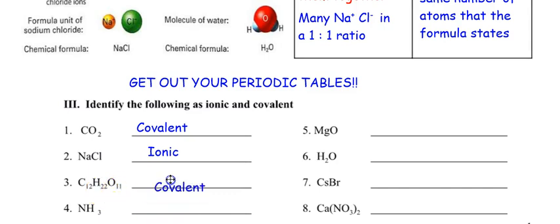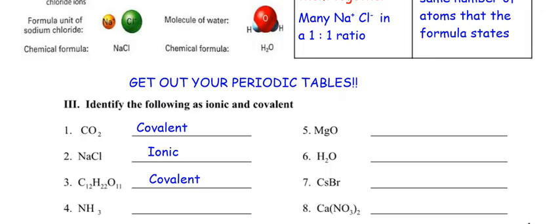For number four, nitrogen is a non-metal and hydrogen is a non-metal — so that would be covalent. Why don't you pause this — and I mean that, pause this — and do numbers five through eight on your own? See what you get.